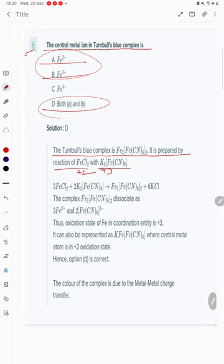3FeCl2 + 2K3[Fe(CN)6] gives Turnbull blue. Fe3[Fe(CN)6]2 is what is called Turnbull blue. Thank you very much for watching.